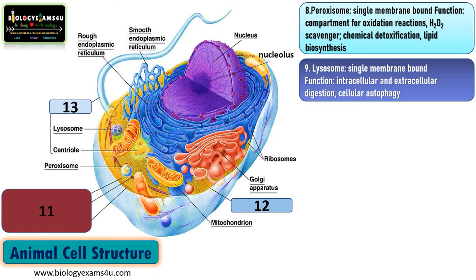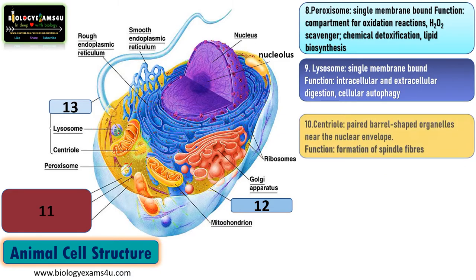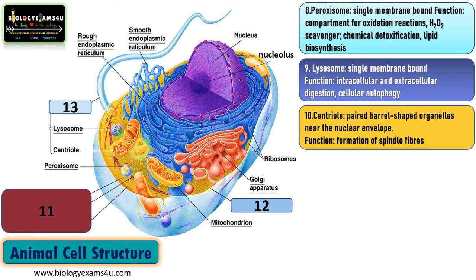The next structure is a paired, barrel-shaped organelle called the centriole, seen near the nuclear envelope. Its major function is the formation of spindle fibers during cell division for the proper movement of chromosomes.